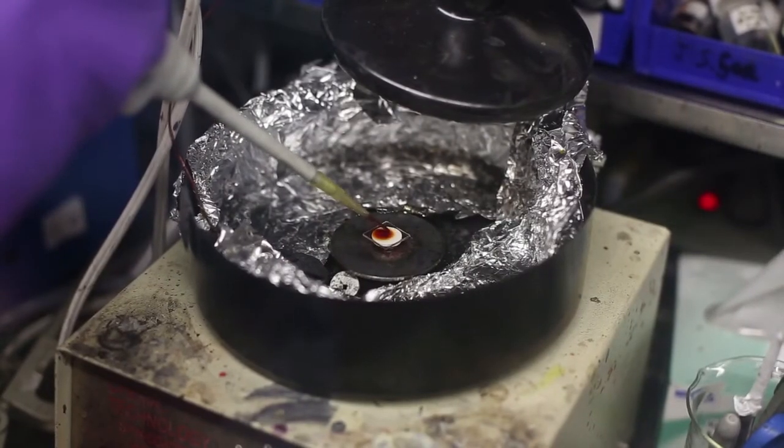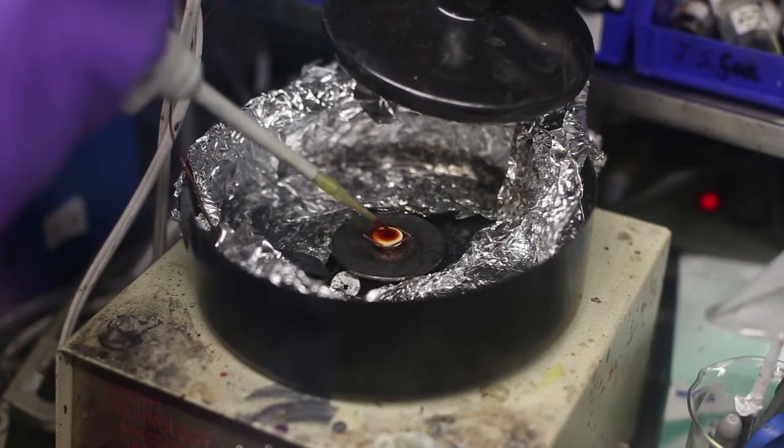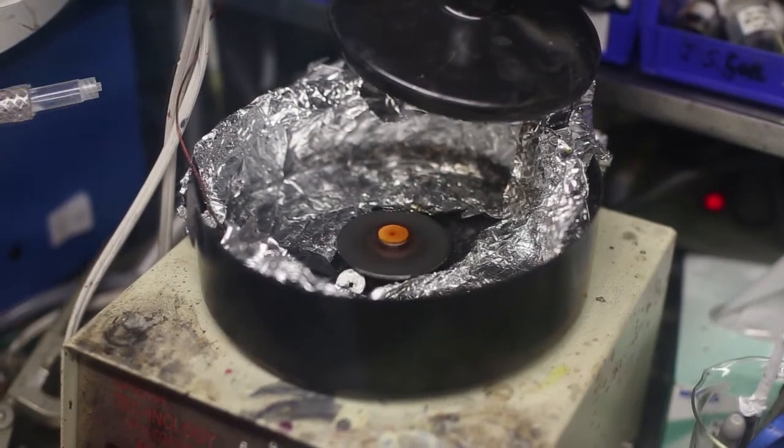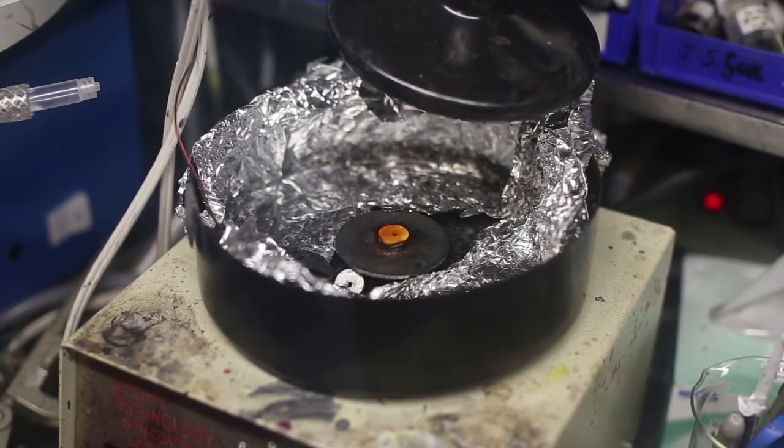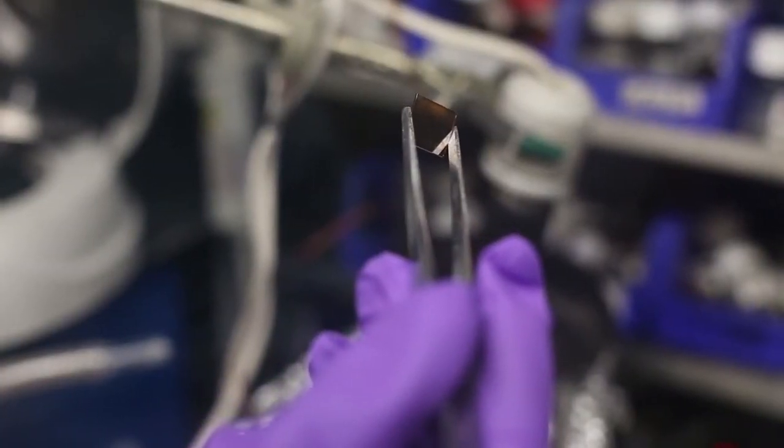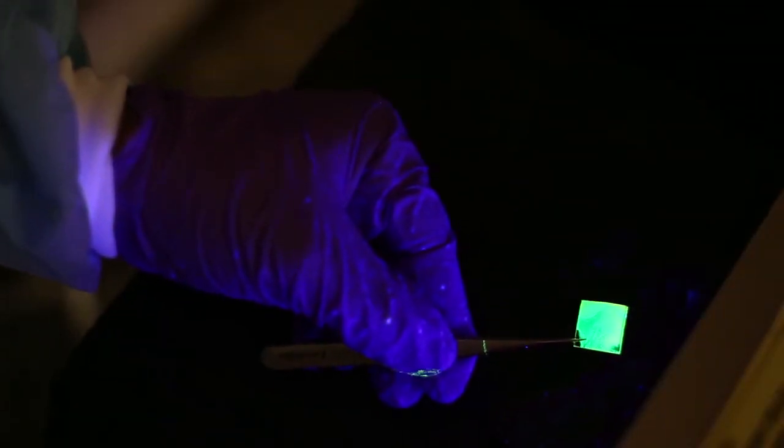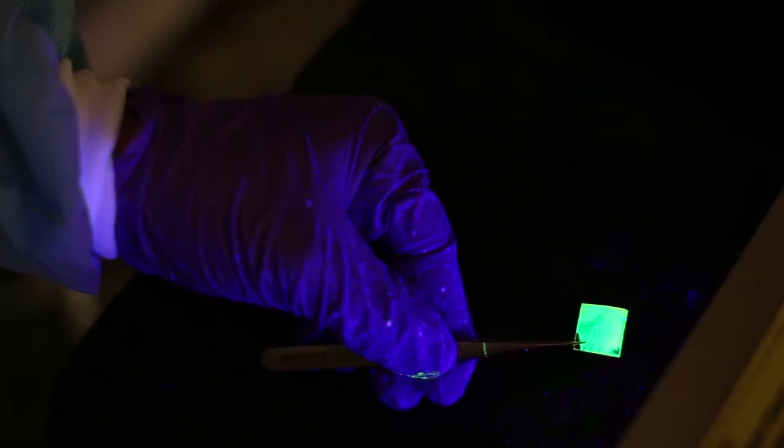Then we spin coat colloidal solutions of the nanoplatelets to produce uniform films. The films luminesce in the corresponding colors under ultraviolet light. Uniform texture of the films is important for their use in lasers.